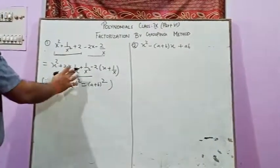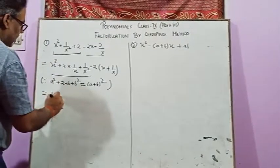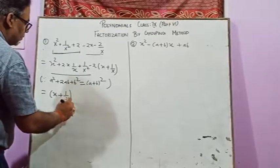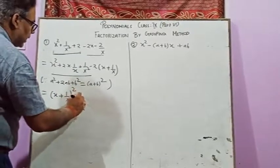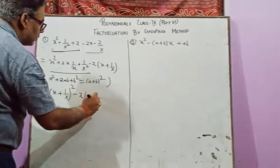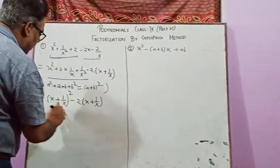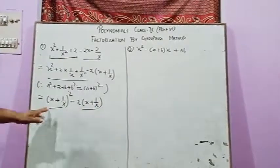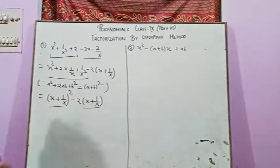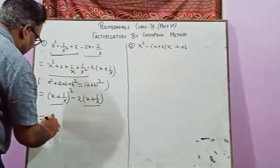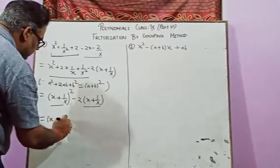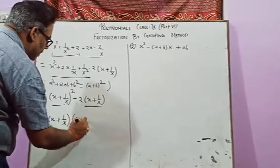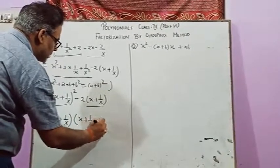If you look at this formula, you can use this formula directly: the whole square minus two into x plus one upon x. If you look at this formula, x plus one upon x is common, and in the other way, x plus one upon x minus two.